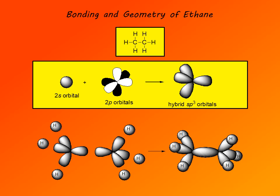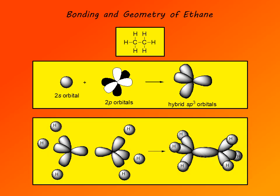Two such sp3 hybridized carbon atoms form a carbon–carbon single bond by overlap of two hybrid sp3 orbitals. The remaining three hybrid sp3 orbitals on each carbon overlap with the 1s orbital of a hydrogen atom to form three carbon–hydrogen bonds on each carbon. This gives the molecule of ethane, shown on the right with its orbitals.